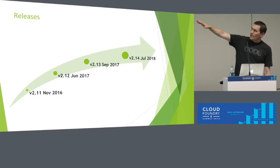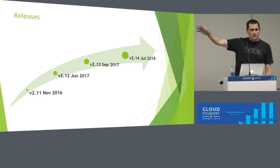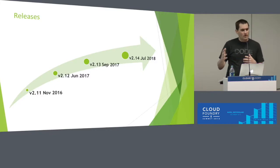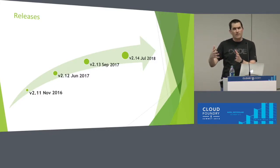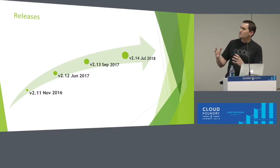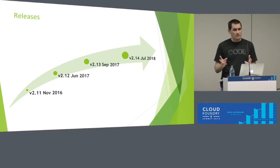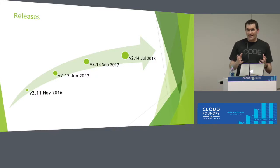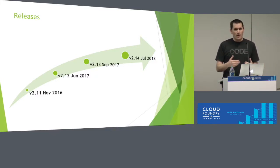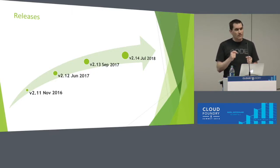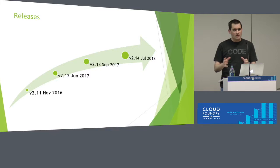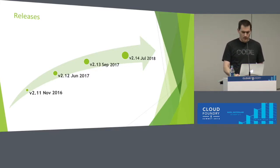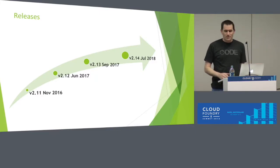In terms of releases, we started back in November 2016. The first release was pretty much just a no-op — we transferred things over to the new working group and put out a release as a baseline. Since then we've had three releases over two years, and I actually think that's a good thing, because that means we're not changing a whole lot in the spec. We're going very slow when we add new things because we don't want to break existing things. We are now up to version 2.14.